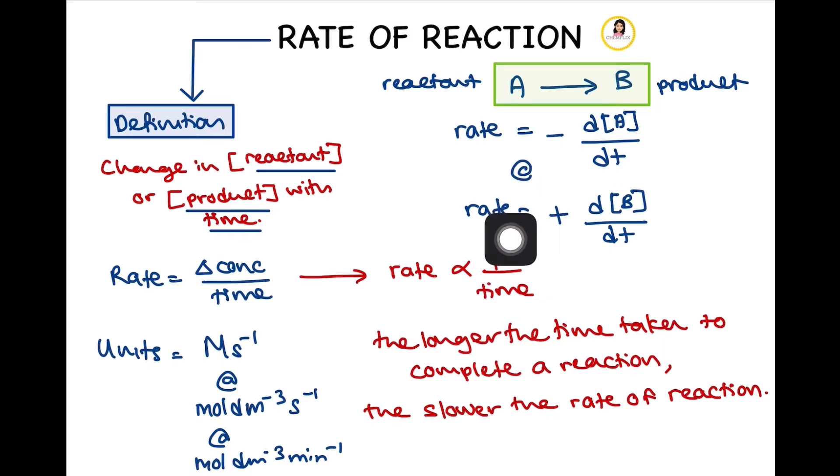Another way to write an expression for rate would be rate equals the change in concentration of B over time. This change is a positive change. Why? Because product concentration increases throughout the reaction until the reaction is complete.